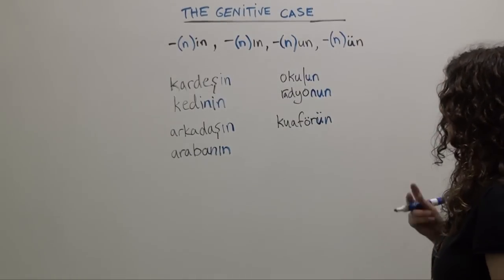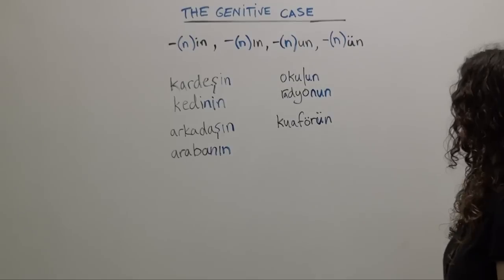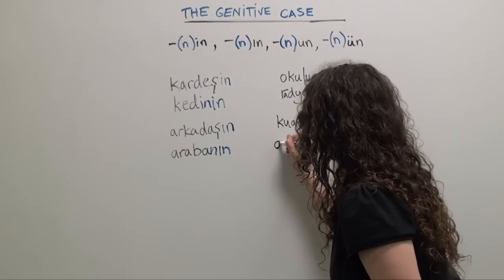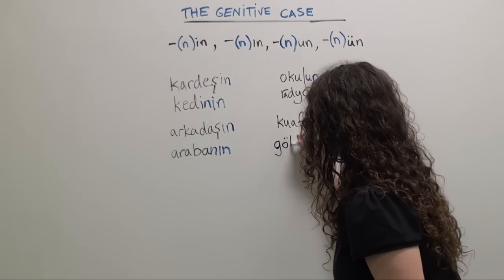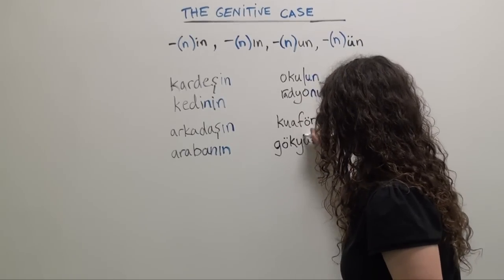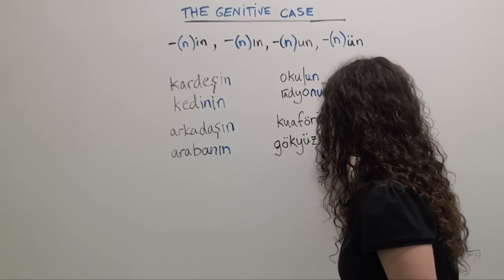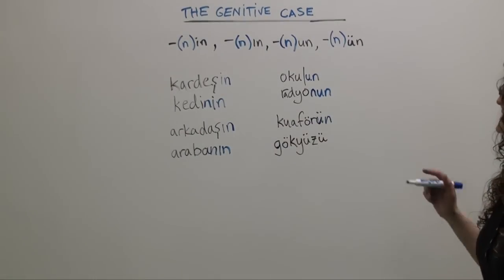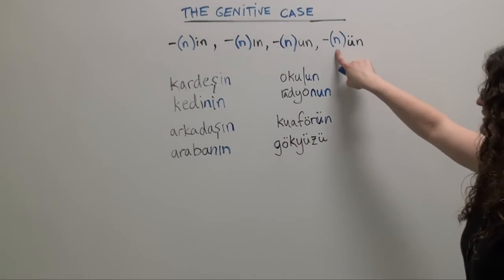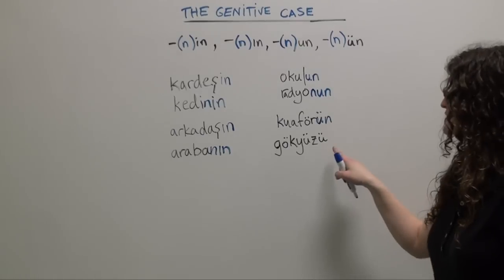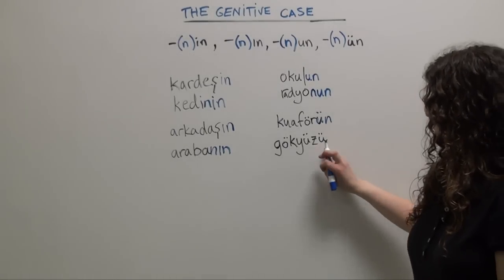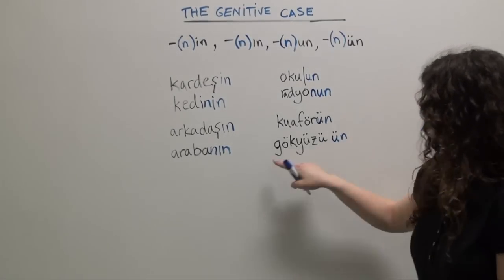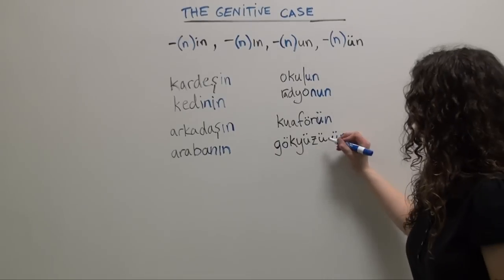Finally, if we want to say 'of the sky,' we start with the Turkish word for sky: gökyüzü. Again, we're going to need to add the buffer N sound to separate the ü in gökyüzü from the ü in our ending, giving us gökyüzünün.